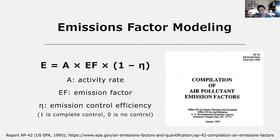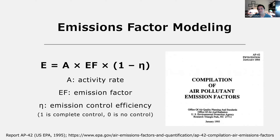A useful analogy is a pay rate. When you have a job, you work a certain number of hours and get paid a particular rate. The activity rate is like the hours you work, and the emission factor is like your pay rate. Some jobs pay more than others, so if two people work the same hours but one earns more, their total pay is greater — just as two facilities with the same activity rate but different emission factors will have different total emissions.